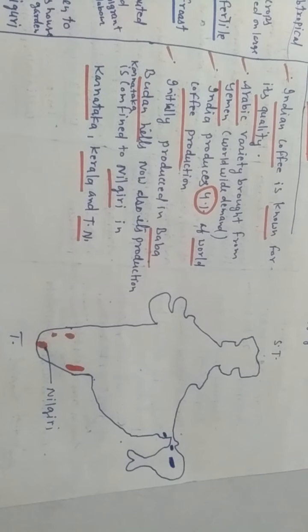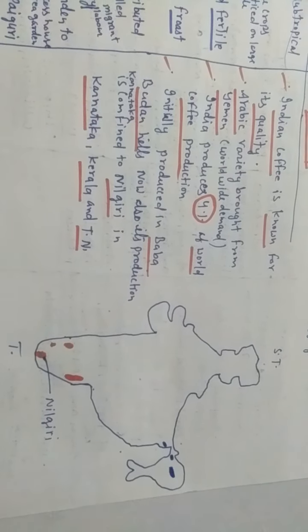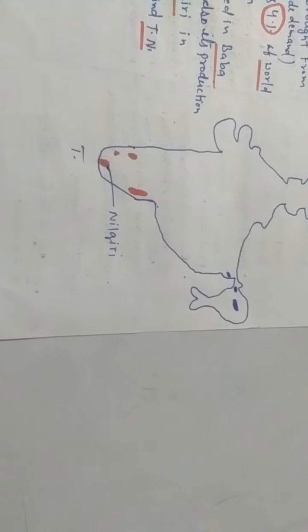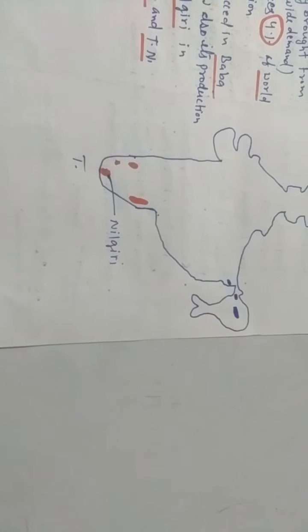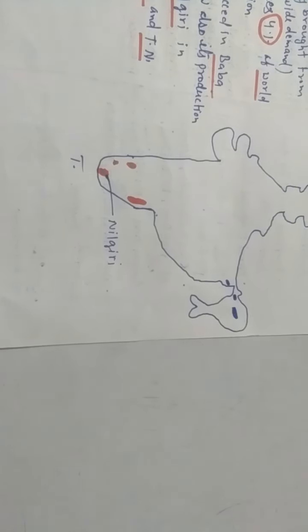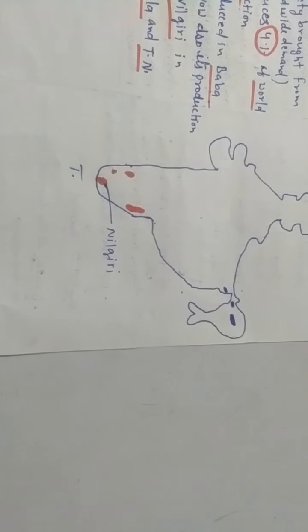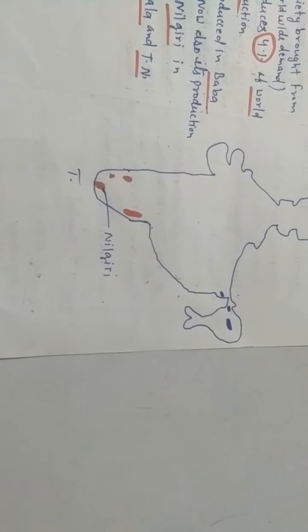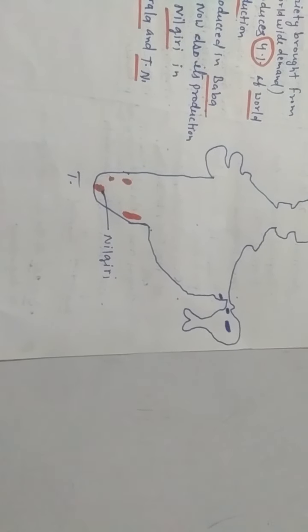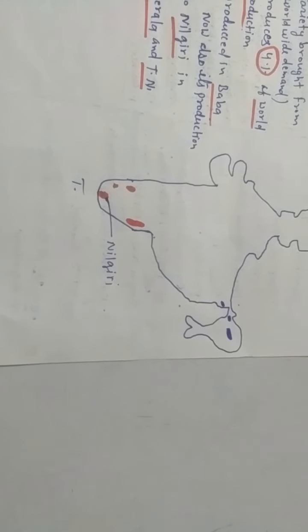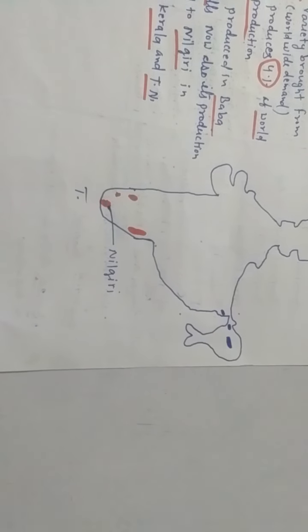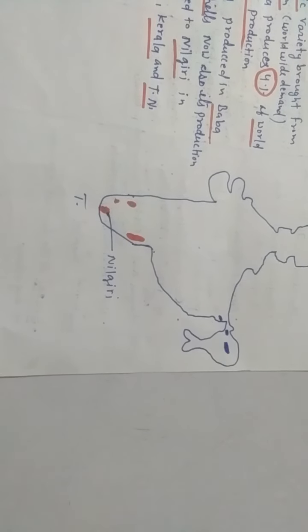Coffee producing states are Karnataka, Kerala, and Tamil Nadu. These are the areas where tea and coffee are grown. Assam, Darjeeling Hills, Jalpaiguri District of West Bengal, and Karnataka are the leading producers of tea. Coffee, you can see with the red dot, Karnataka, Kerala, and Tamil Nadu.